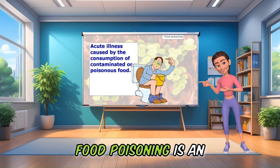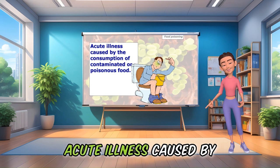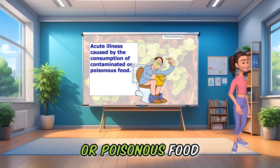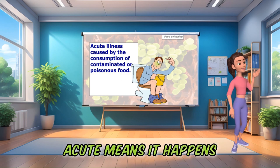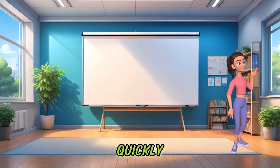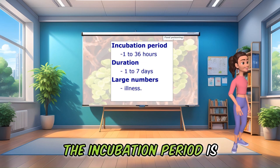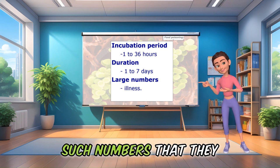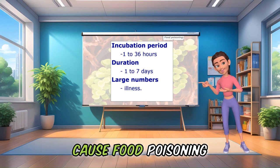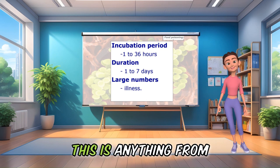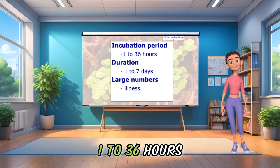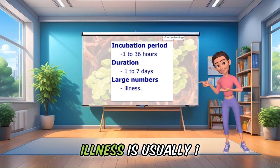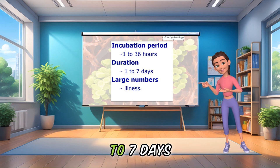Food poisoning is an acute illness caused by the consumption of contaminated or poisonous food. Acute means it happens quickly. The incubation period is the time taken for bacteria to grow to such numbers that they cause food poisoning — anything from 1 to 36 hours. The duration of the illness is usually 1 to 7 days.